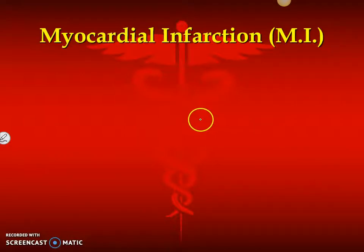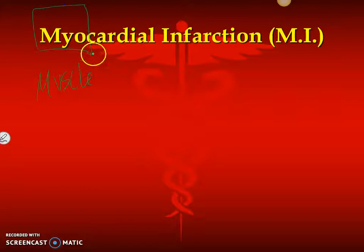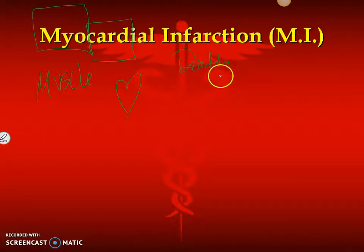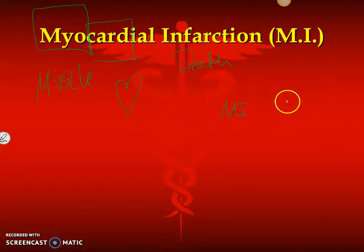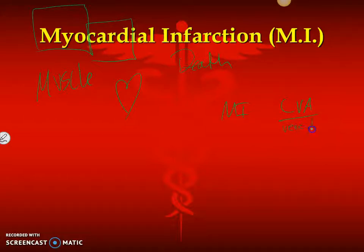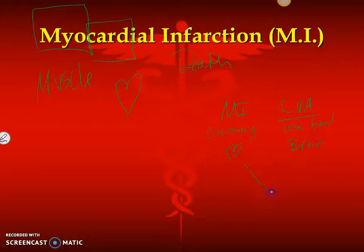Last one — myocardial infarction. Let's take apart the words. Myo means muscle. Cardi means heart. So this is a heart muscle. Infarction is death. So myocardial infarction is heart muscle death — a heart attack. Now, a lot of people get MI mixed up with CVA. They're similar in the way the damage happens, but they're different: a cerebral vascular accident is a vessel in the head, while a myocardial infarction is generally the coronary artery that gets blocked. In MI the heart dies; in CVA the brain dies. But both are affected by thrombi or emboli or different ways to reduce oxygen.